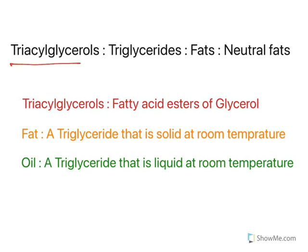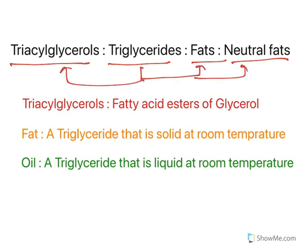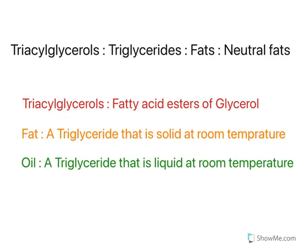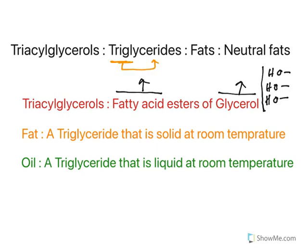Triglycerides, fats, and neutral fats are all synonyms — they are used interchangeably. Triglycerides are also known as fats, neutral fats, and triacylglycerides. Triacylglycerides are esters of fatty acid and glycerol. Esters are made by the combination of alcohol and acids. In this case the acid is a fatty acid whereas the alcohol is glycerol. Glycerol has got three hydroxy groups, so all three can combine with three fatty acids — hence the name triglycerides.